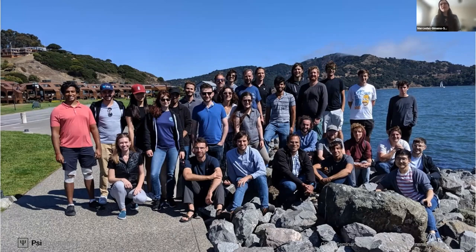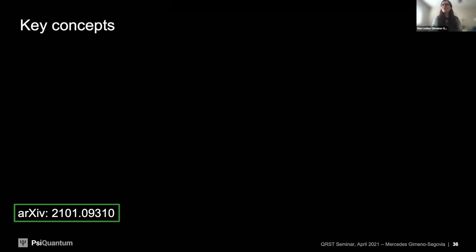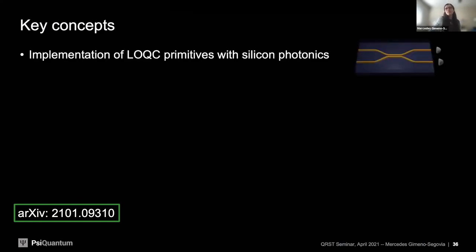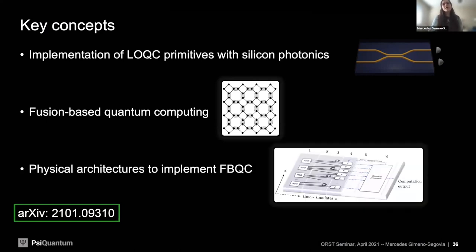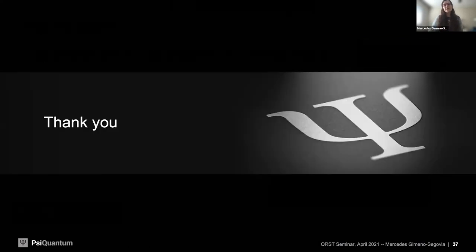In summary, we covered: the implementation of linear optical quantum computing primitives with silicon photonics — particularly fusion gates, the more natural entangling gate for photonics; the new framework of fusion-based quantum computing, referenced in the paper cited on this slide; and the physical architecture — how this abstract framework translates into an actual device. Thank you very much, and I'm happy to take questions.